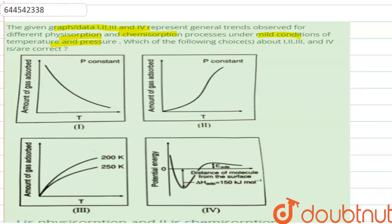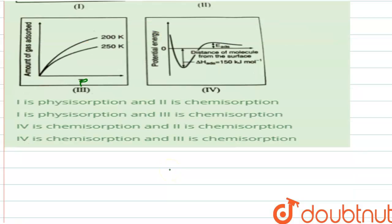There are 4 graphs given. In the first graph, as we increase the temperature, the amount of gas decreases. In the second graph, as the temperature increases, the amount of gas decreases. In the third graph, there is slight change and it should be pressure instead of temperature. So if we increase the pressure, the amount of gas adsorbed also increases. And the fourth graph is the graph of formation of chemical bond between two particles.